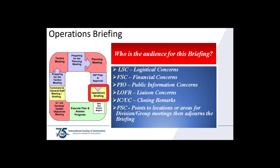The medical unit leader presents the ICS-206 medical plan. The logistics section chief presents any logistical concerns. The finance section chief presents any financial concerns. The PIO presents any public information concerns. The liaison officer presents any liaison concerns. Lastly, the planning section chief points to locations or areas for division and group meetings, then adjourns the briefing.